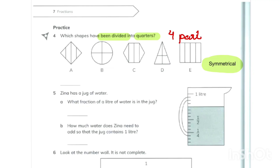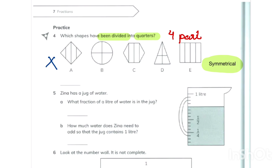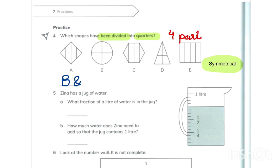In question number 4, we have to select shapes divided into quarters. Quarters means four equal parts — they should be symmetrical and identical. Shape A is not equal parts, but B looks fine — all parts are equal. C and D are not equal distributions, and E also has equal parts. So we select B and E.